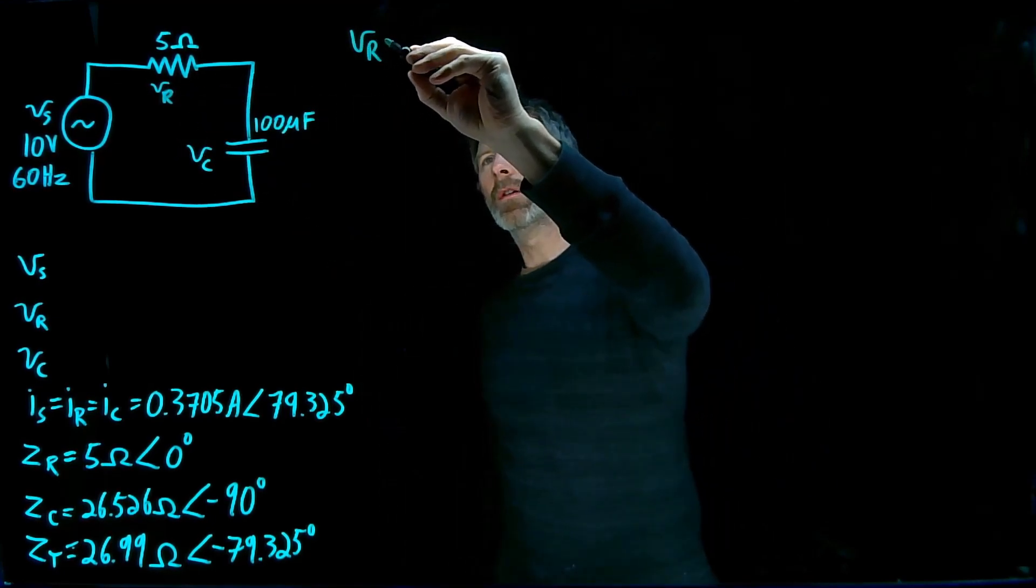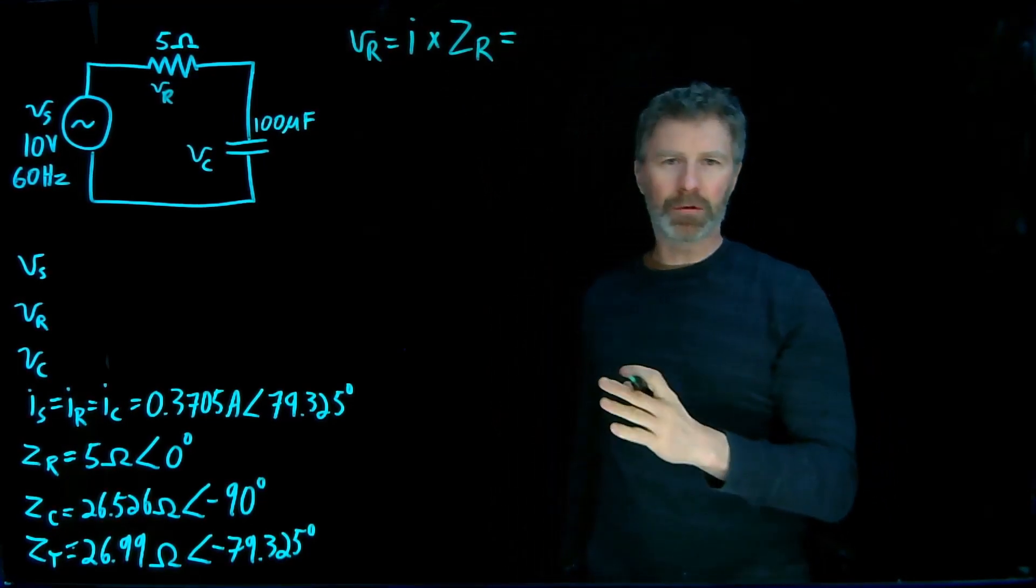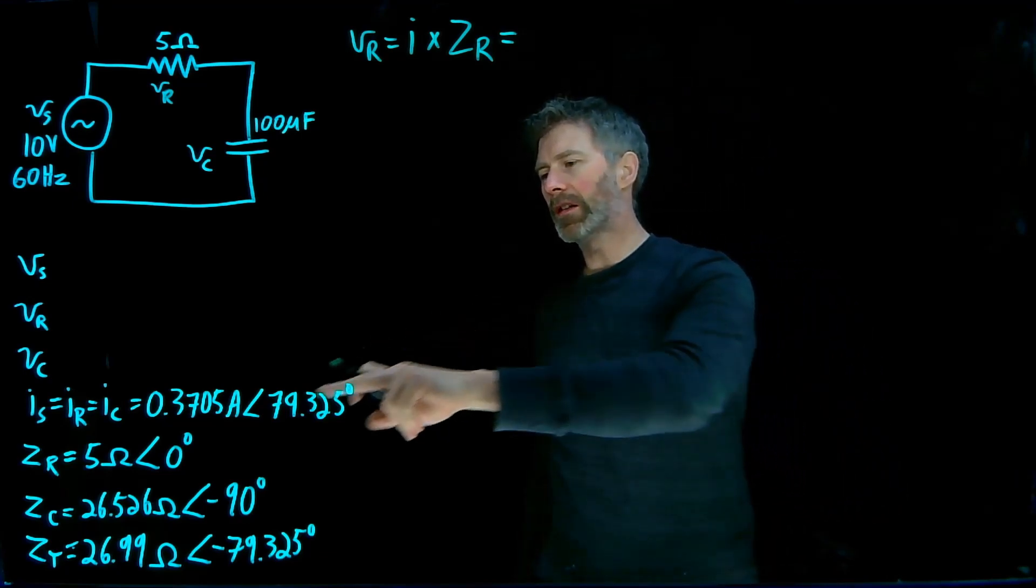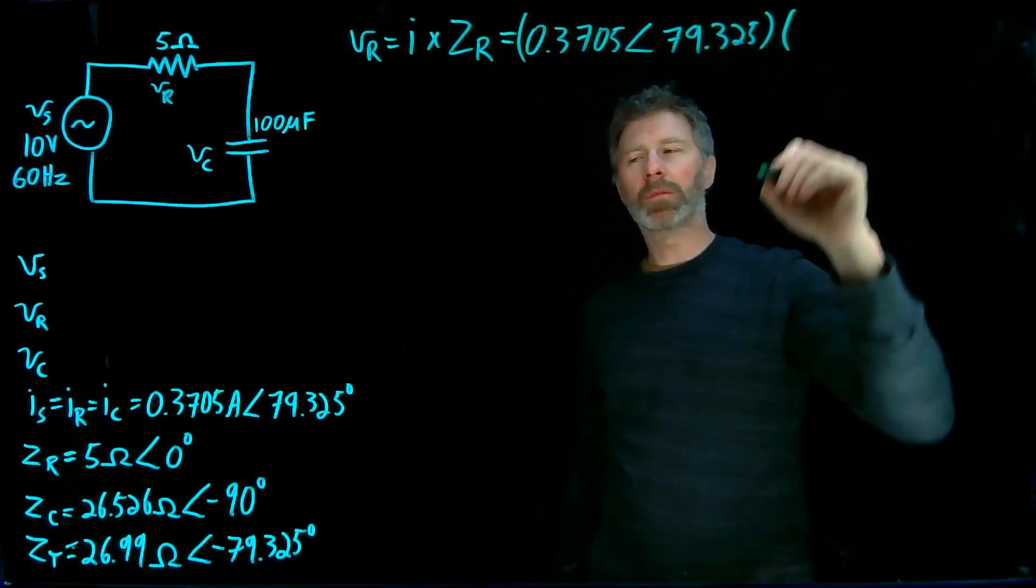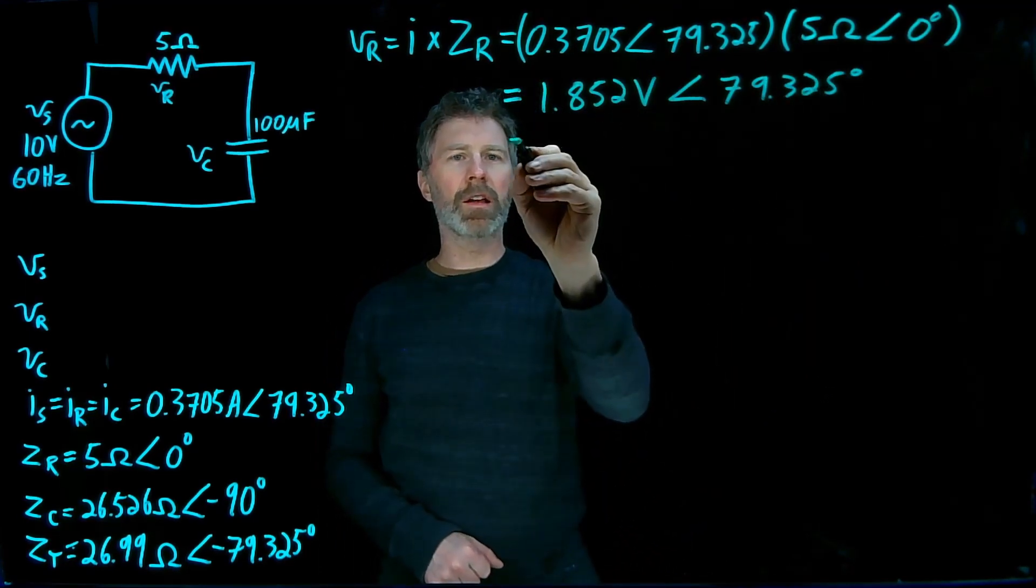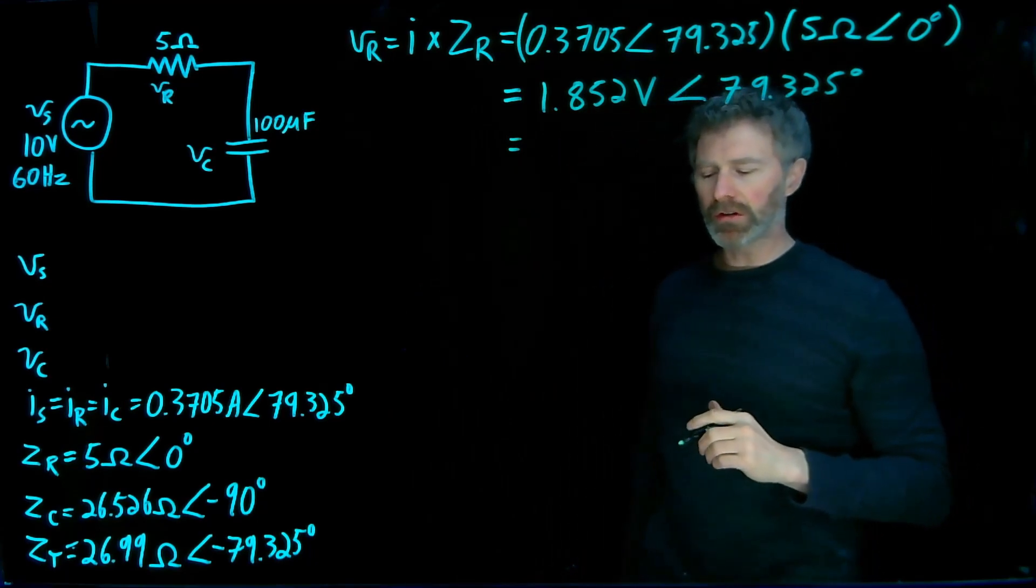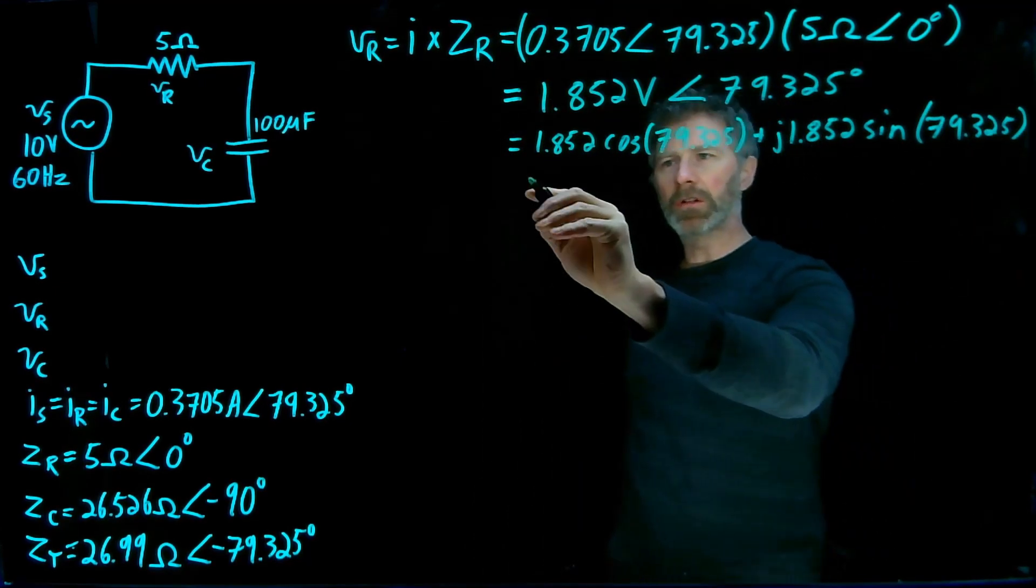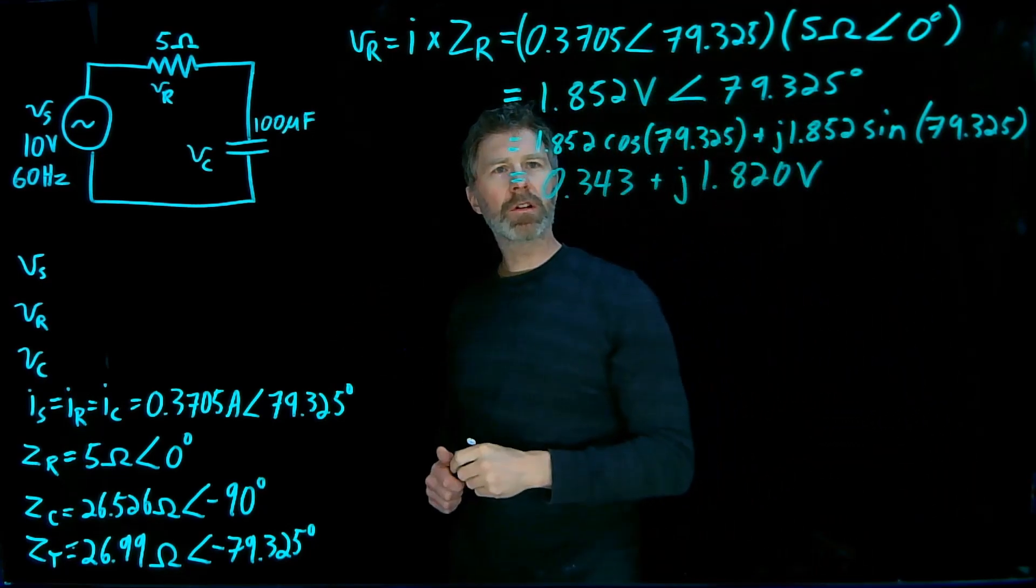That Vr equals the current times the impedance of the resistor. Again, doing a multiplication is going to be much easier when the numbers are in polar notation. So I can take this value, so there's my current, multiply it by the impedance of the resistor. I can convert this from polar notation into rectangular notation. Plug these numbers into a calculator and I get...